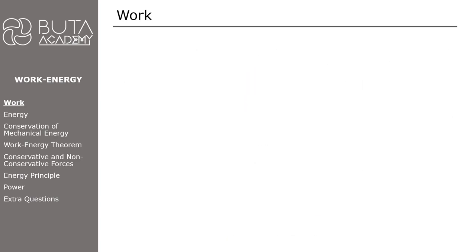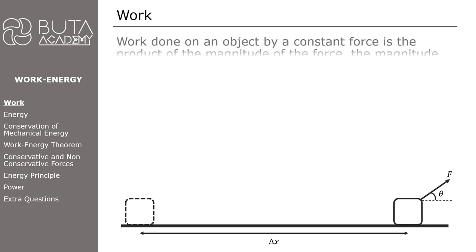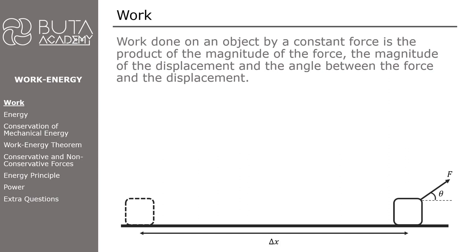Consider the case where a force F is applied to an object, makes an angle of theta with the horizontal. The object moves across a surface and its displacement equals delta x. According to physics, the amount of work done on this object by the constant force is the product of the magnitude of the force, the magnitude of the displacement, and the cosine of the angle between these two.